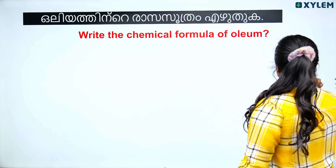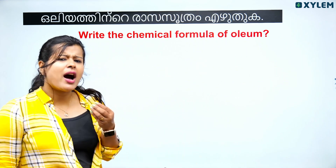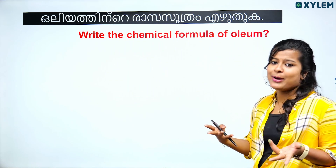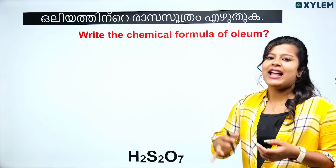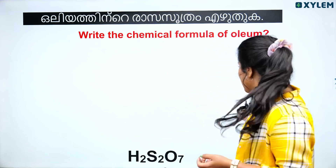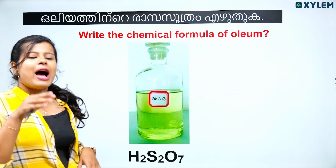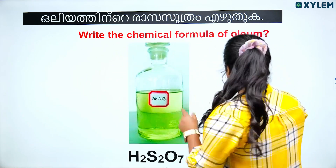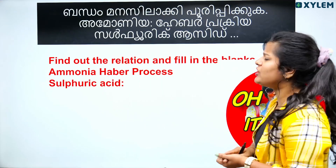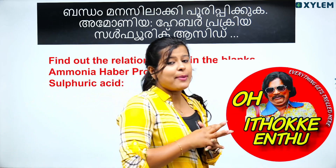The chemical formula of oleum is H2S2O7. We have already studied and discussed sulfuric acid preparation. We have asked about the sulfuric acid preparation previously.